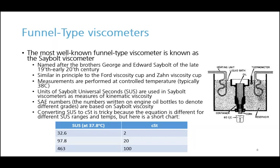This viscometer generates data in units of Saybolt Universal Seconds, typically represented as SUS. These units can be converted to centistokes at 37.8 degrees Celsius, although the conversion is a little tricky — there are actually several different formulas depending on how high the SUS number is. For easy reference, we put together a chart of a couple of different points. An interesting note is that SAE numbers for oil — the oil grade numbers written on a bottle of engine oil — are actually based on Saybolt viscosity originally, because this method used to be quite popular among the petroleum industry.